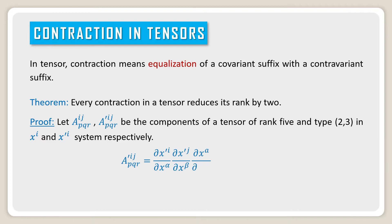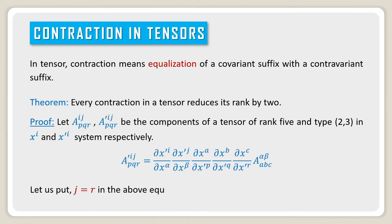a'^ij_pqr is equal to (∂x'^i / ∂x^α) · (∂x'^j / ∂x^β) · (∂x^a / ∂x'^p) · (∂x^b / ∂x'^q) · (∂x^c / ∂x'^r) · a^αβ_abc. Let us substitute j equal to r in the above equation.